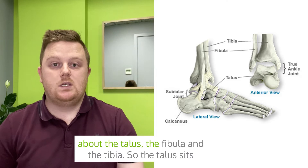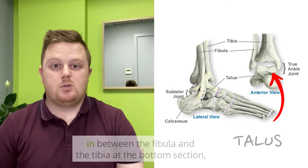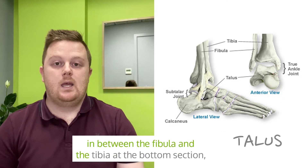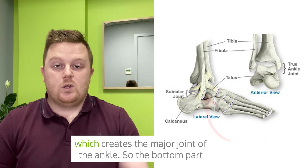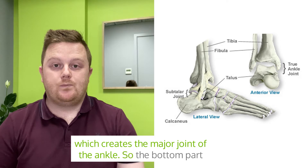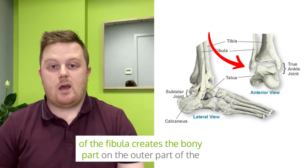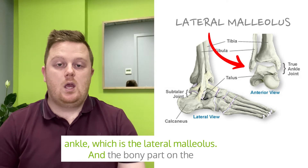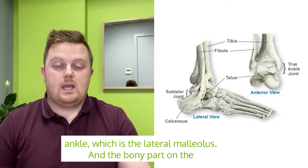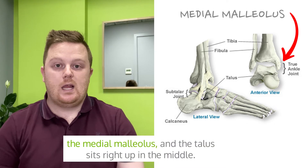The three major bones are the talus, the fibula, and the tibia. The talus sits in between the fibula and the tibia at the bottom section, which creates the major joint of the ankle. The bottom part of the fibula creates the bony part on the outer part of the ankle, which is the lateral malleolus, and the bony part on the inner part of the ankle is created by the tibia — that's the medial malleolus.